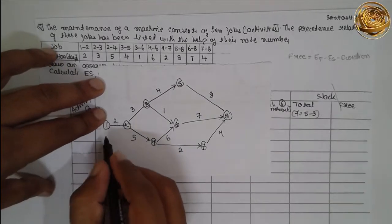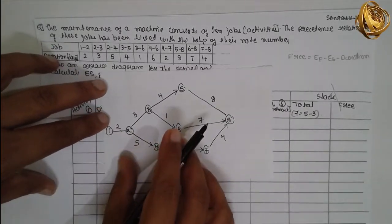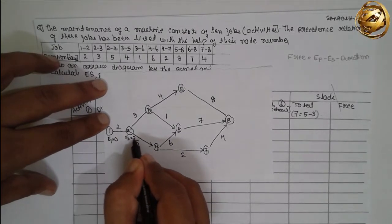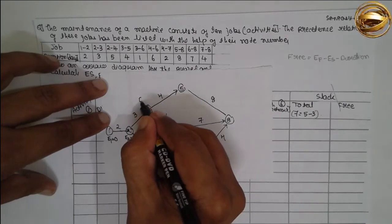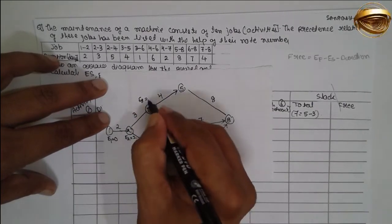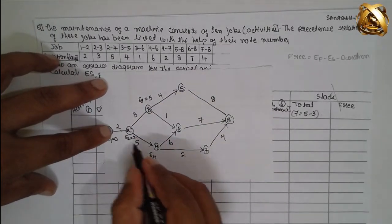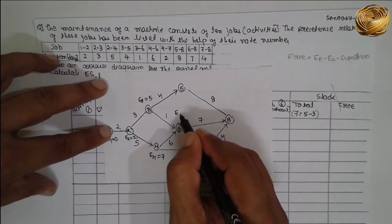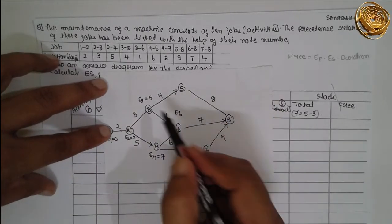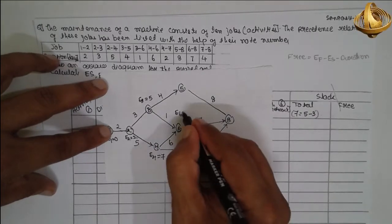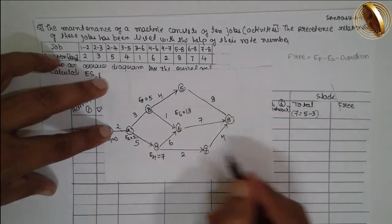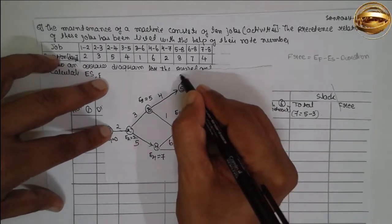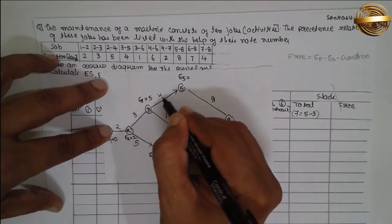Now I will find out the earliest time and finish time. E1 equals zero. Zero plus 2 — E2 will be 2. E3: take max of 2+5 and 2+3, which gives 5. E4: 5 plus 2 equals 7. As we move left to right at a junction, we select the larger value. E7 equals 7 plus 2 equals 9. E5 equals 5 plus 4 equals 9.